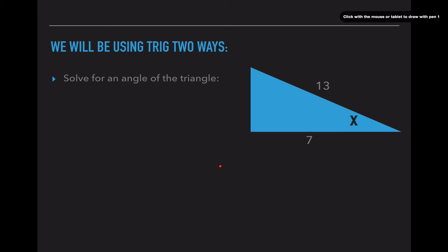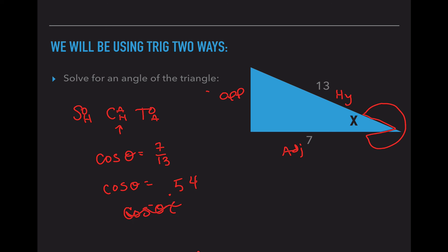Okay, so one more time, solve for the angle of the triangle. So I've drawn my pacman. I have my pacman right here. This side is our opposite. This side's our adjacent. This side is our hypotenuse. So if we write out our SOHCAHTOA, I want to use cosine. So cosine theta equals 7 over 13, which leaves us with cosine theta equals 0.54.